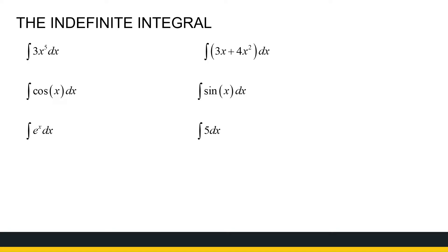Intuitively, what must I differentiate to get 3x to the power 5? We know when we differentiate, we make the exponent of x less by 1, so we should have an x to the power 6. But what is the constant in front? If I differentiate x to the power 6, I get 6x to the power 5, but I want 3x to the power 5, not 6. So if I have a half — half x to the power 6 — the derivative of that is 3x to the power 5. So the integral is half x to the power 6 plus c.